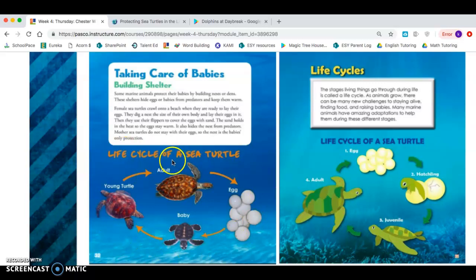Mother sea turtles do not stay with their eggs so the nest is the baby's only protection. And then I see life of a sea turtle right here. We have egg, baby, young adult, adult. Looking at life cycles again. The stages living things go through during life is called a life cycle. As animals grow, there can be new challenges, staying alive, finding food, and raising babies. Many marine animals have amazing adaptations to help them during these different stages.